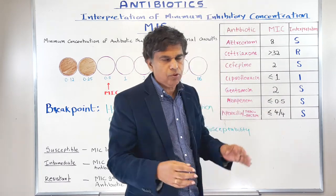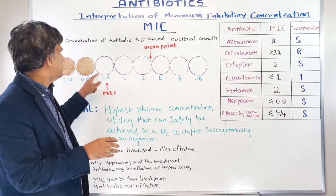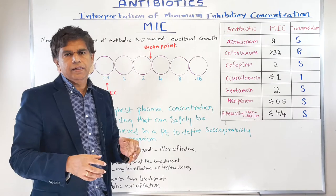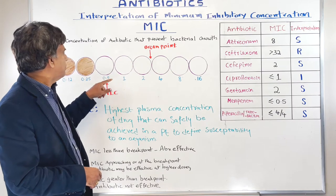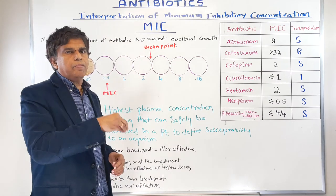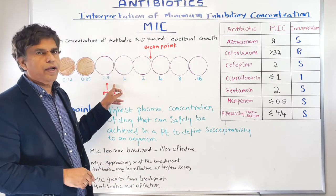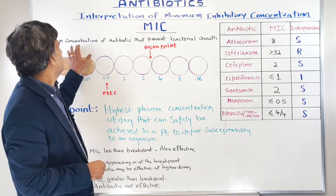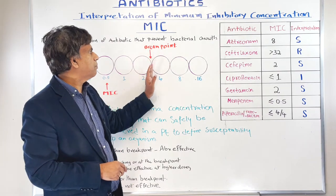Here's how MIC is determined. You get 8 test tubes and put the drug in serial dilutions: 0.12, 0.25, 0.5, 1, 2, 4, and so on. Then you put the same amount of bacteria in each tube. Let's say at 0.5, you inhibit the bacterial growth — that is the minimum concentration of antibiotic that prevents bacterial growth. That is the MIC.